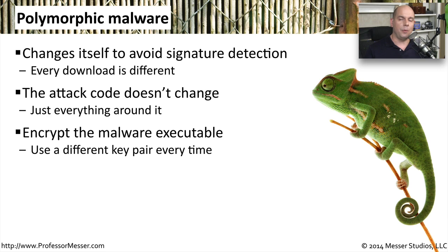Another method malware authors use is to encrypt the attack code, using different keys every time. This means that the attack code on one system will have a completely different signature than the attack code on another system, even though it's exactly the same attack code. Only after decrypting the attack code do we see that it is exactly the same on both systems.